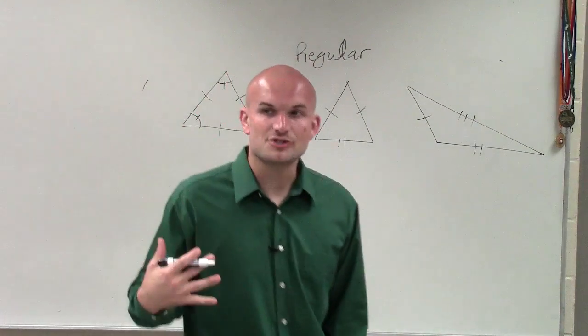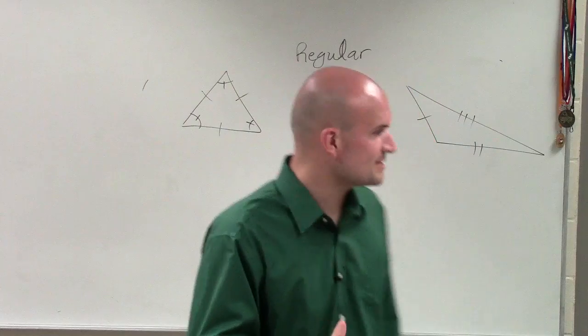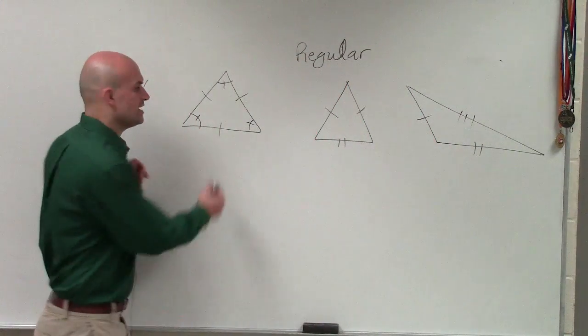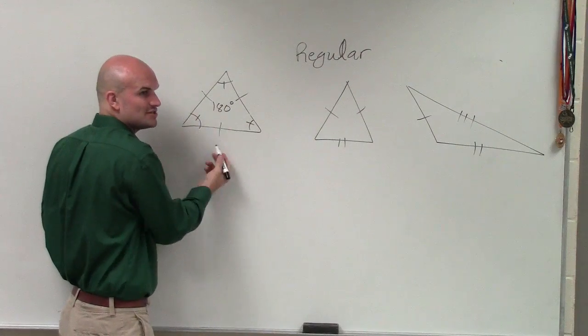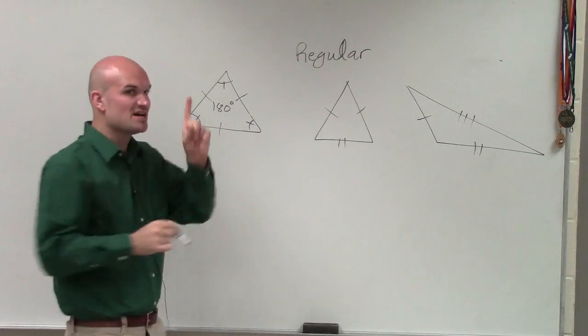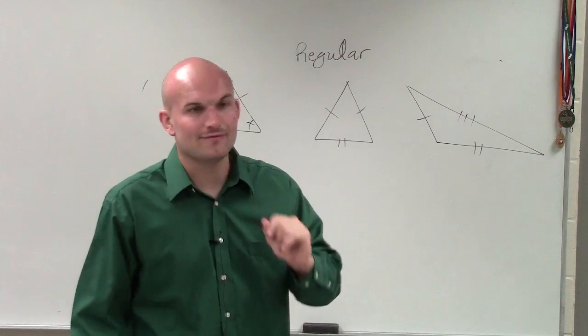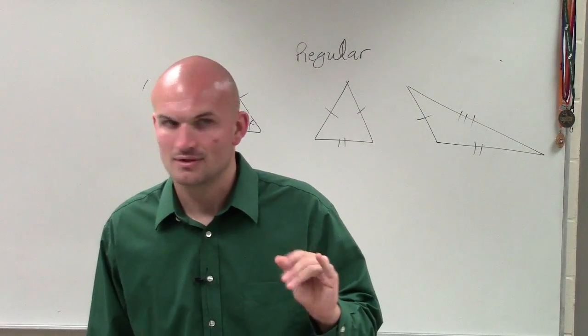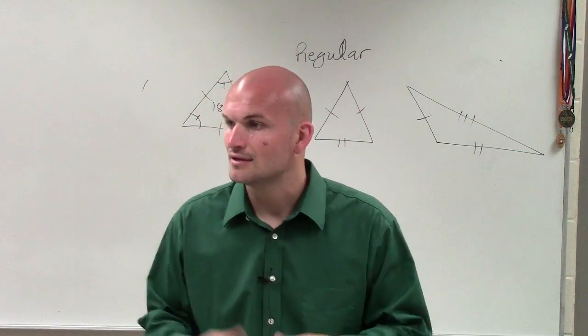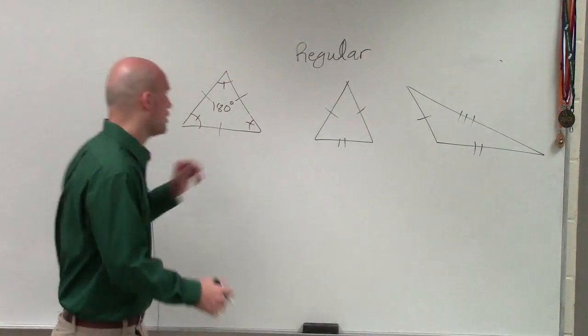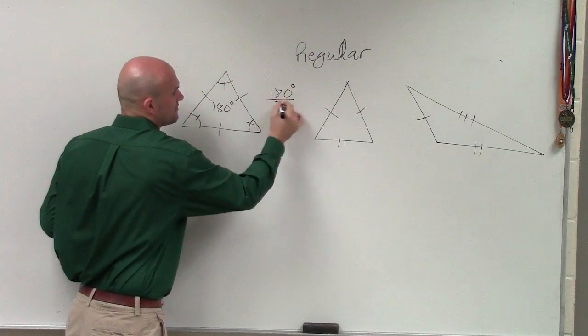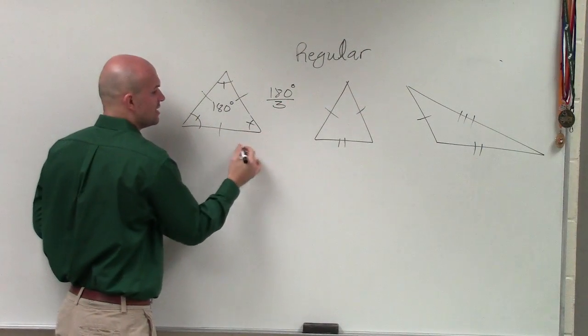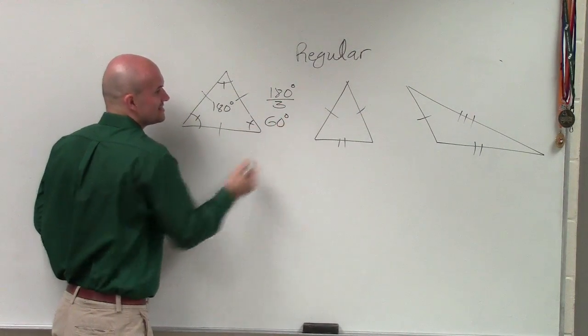So if I was looking at this and I said, we know that a triangle is 180 degrees. If all three of these are equal in measure, if I just wanted to find the measure of one of those angles, what would I have to do to 180? I could take 180 and divide it by three. Because these are all equal in measure, so I could take 180 and divide it by three, and therefore that's going to tell me that each one of these angles is 60 degrees.